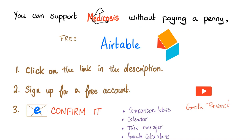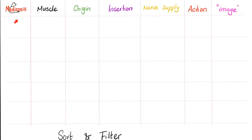If you want to support Medicosis without paying anything, check the link in the description, the Airtable link. You can sign up and confirm the email. Airtable is a great software that can help you make comparison tables, calendars, task managers, and formula calculations, etc. Here's a great way to study using Airtable that no one uses, except Medicosis fans.